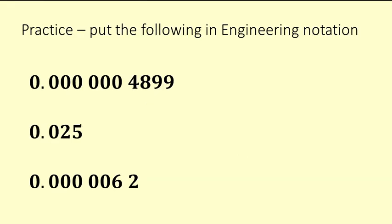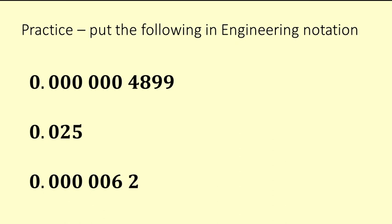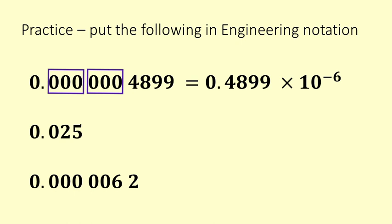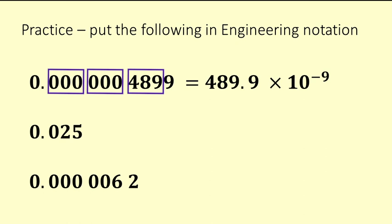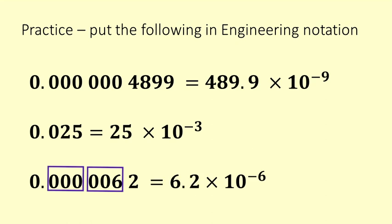Here's some practice with small numbers — pause and give it a try. Now the answers: for the first one, you need to move the decimal point three blocks of three to get a number between 1 and 999, because engineering notation numbers need to be between 1 and 999. So it's 489.9 times 10 to the negative 9. The next one, 0.025, is 25 times 10 to the negative 3. And the last one is 6.2 times 10 to the negative 6.